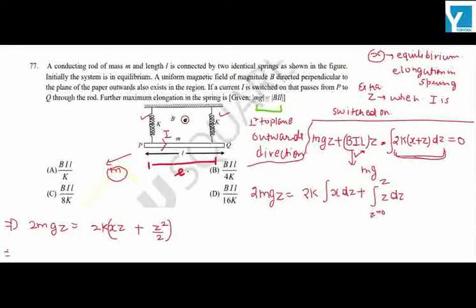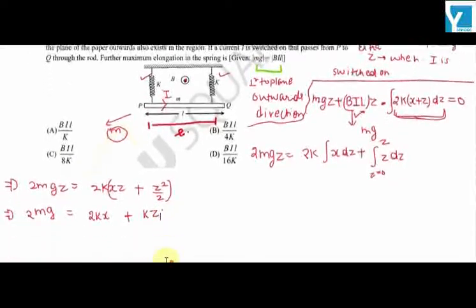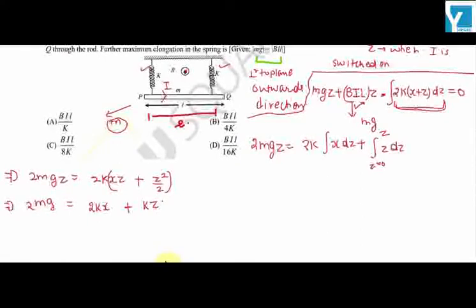So z from both sides will cancel, and we will get 2mg equals 2kx + kz. Now further, this 2kx equals mg in the equilibrium position, so mg should equal kz, or z equals mg/k.